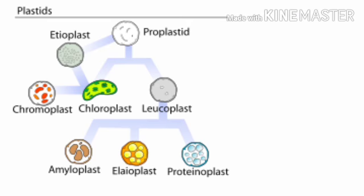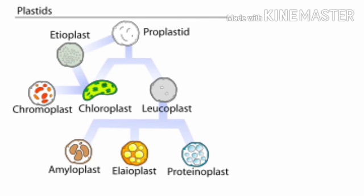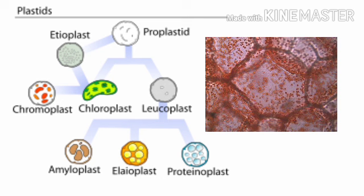Another type of plastid found in plants is the leucoplast, which lacks any pigment and is actually a storage organelle. Depending on the type of substance it stores, it can be called an amyloplast, which stores starch; an aleuroplast, which stores proteins; or an elaioplast, which stores lipids. Chromoplast is a pigment-bearing plastid that gives specific color to parts of the plant, as it contains different color pigments other than chlorophyll.